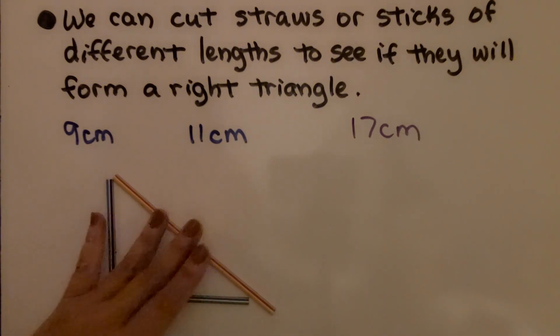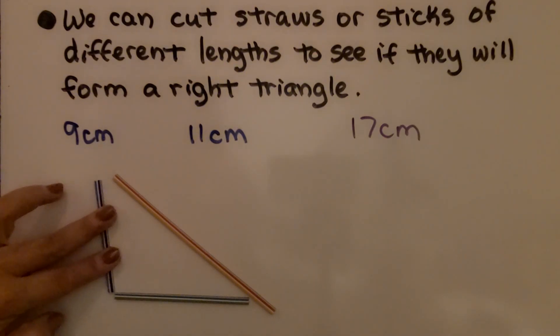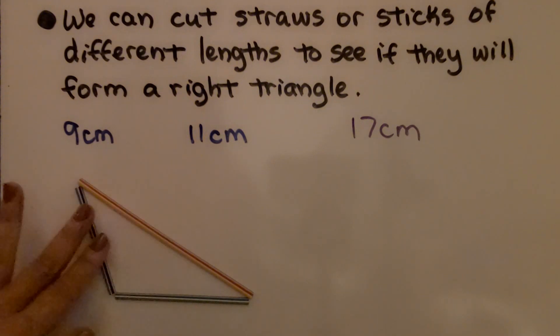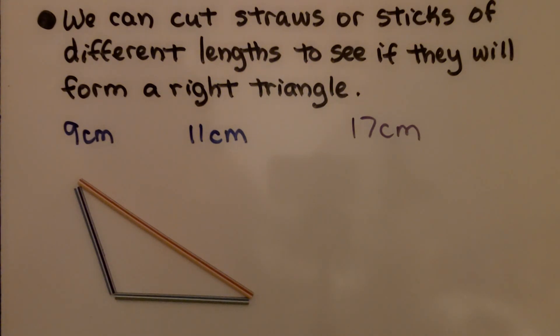Oh no, it's too long. The only way to get it to fit is to open this angle up more and then lay it in there. So no, 9, 11, and 17 are not side lengths that form a right triangle. You can try this with other lengths of straws or sticks. Just make sure you write down what the lengths are.